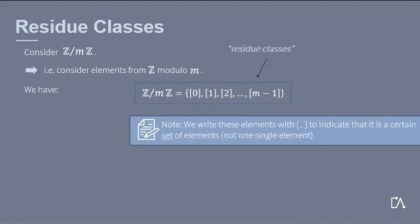which are written in square brackets. Only the residue classes from 0 to m minus 1 are contained, since 0 and m, as well as 1 and m plus 1 are each equal modulo m.